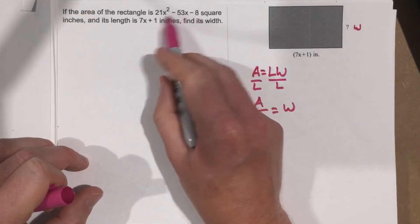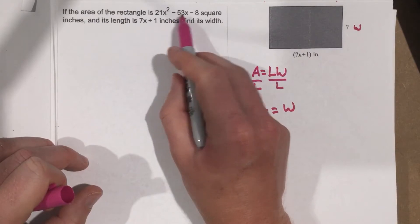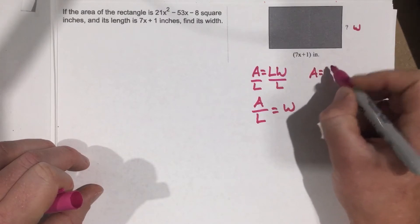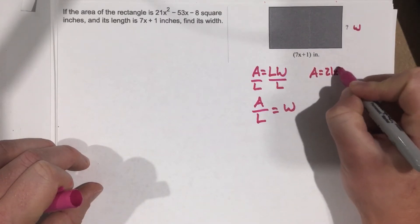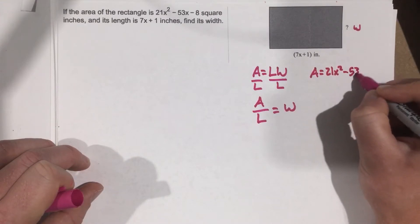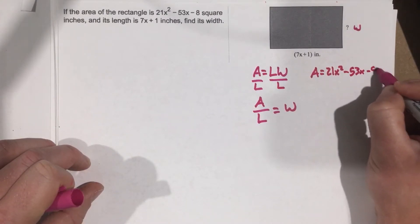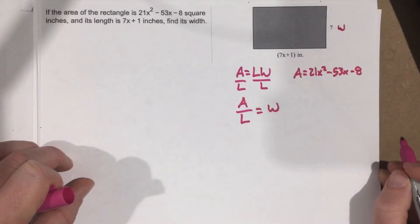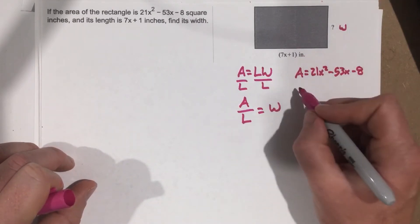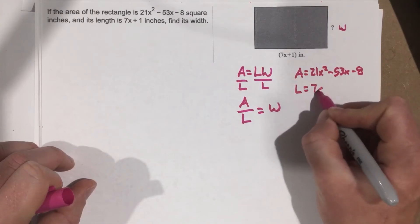Well, they give us the area, it's 21x squared minus 53x minus 8. So we already know the area, which is 21x squared minus 53x minus 8. That's the area, and we know the length is 7x plus 1.